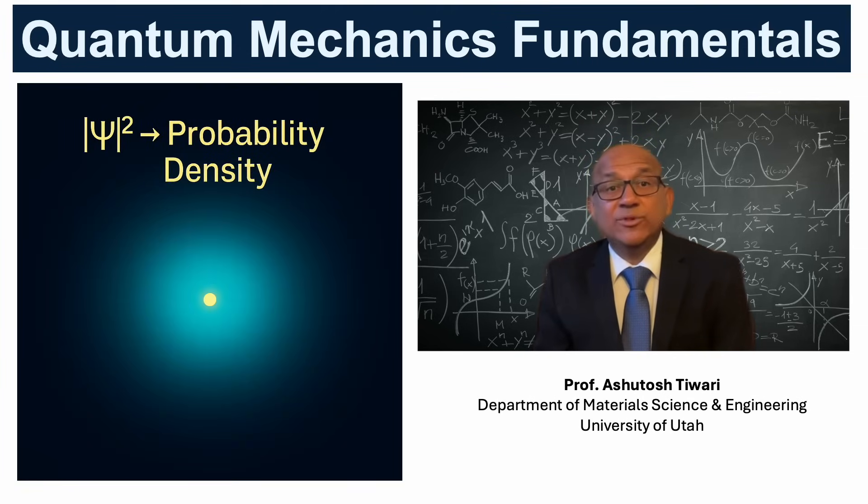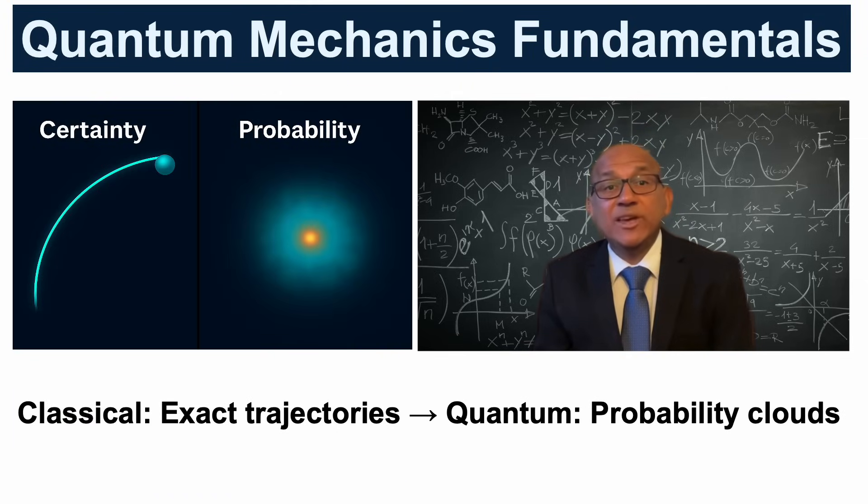The real power of psi comes when the square of its magnitude, absolute value of psi-squared, gives the probability density of finding a particle in a certain region of space. This marks one of the biggest shifts from classical physics to quantum mechanics.